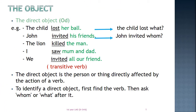The object. There are two types of objects in English: the direct object and the indirect object. First, the direct object. The symbol is O-D. The direct object is the person or thing directly affected by the action of a verb. We take the examples.